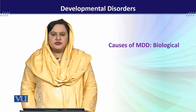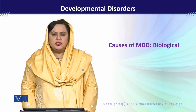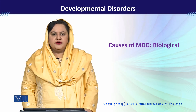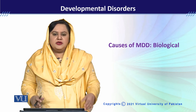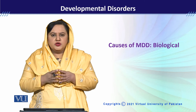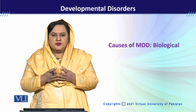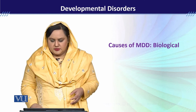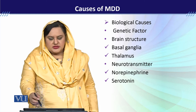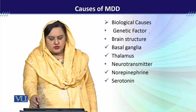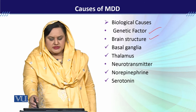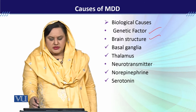We will discuss why Major Depressive Disorder can exhibit in someone, and the biological causes. The first cause we discuss is the genetic factor, then we talk about brain structure, and then we talk about neurotransmitters.